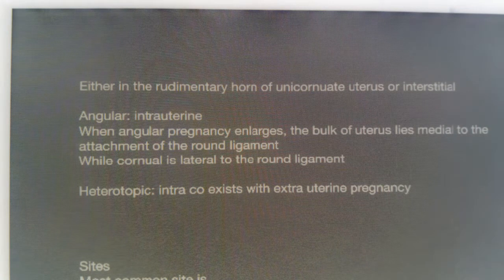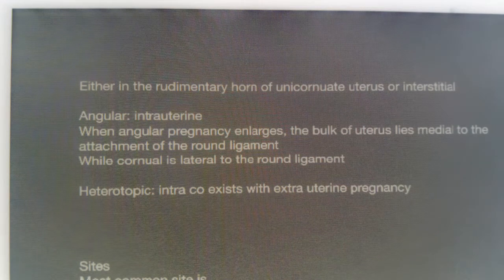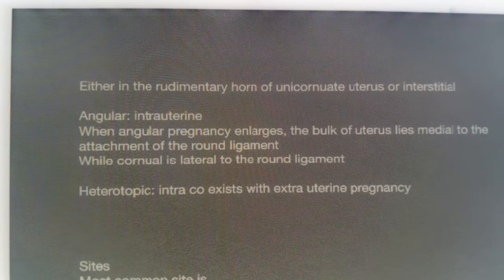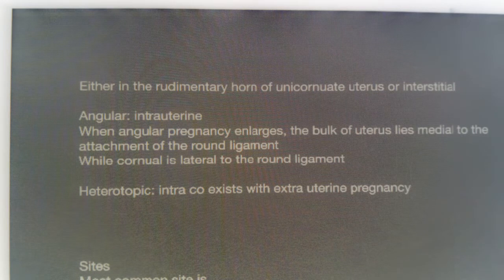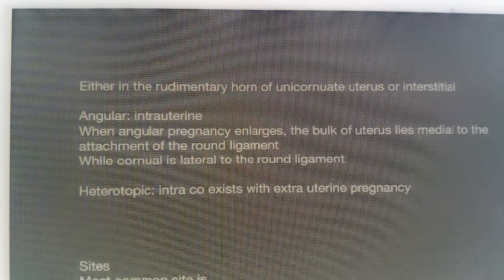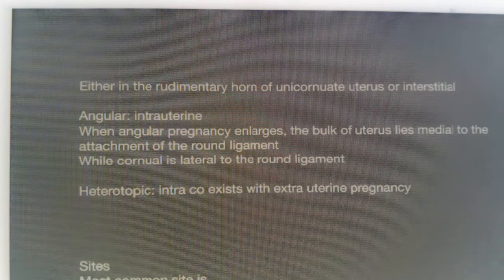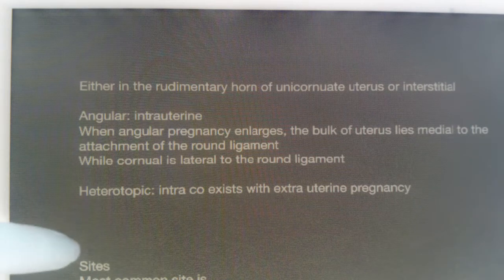Heterotopic pregnancy is when both an intrauterine and an extrauterine gestational sac are present simultaneously — two gestational sacs, one intrauterine and one extrauterine occurring at the same time. That is called heterotopic pregnancy.